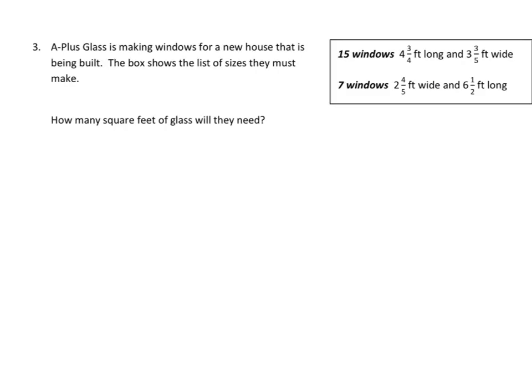Okay, this is strictly from the homework. And it's really very similar to the previous problems, except we have a little bit more calculating to do. It says the A-plus glass is making windows for a new house that is being built. The box shows the list of sizes they must make. How many square feet of glass will they need? We have 15 windows at 4 and 3⁄4 by 3 and 3⁄5. What do we do? We have to find the area of each one of these windows, then multiply it by 15. Then we need to do the same thing with the 7 windows here. Find the area of the windows, multiply them by 7. Once we have the total area of 15 windows and 7 windows, we add those to find the sum. Not that complicated, but a lot of computation. And I don't see any simple shortcuts here.